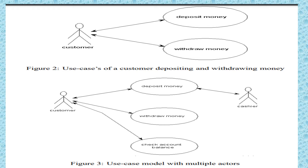Now it might be that the system being implemented in the bank needs to involve a cashier for depositing, but that to withdraw money the customer has to use the cash machine. The cashier is then involved, and taking this into account — along with allowing customers to check their account balance — requires further additions to the model.